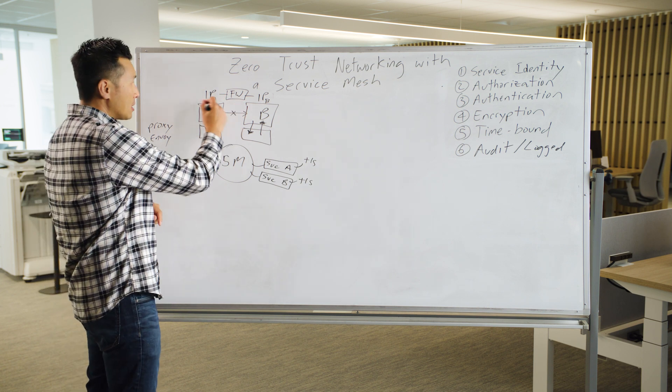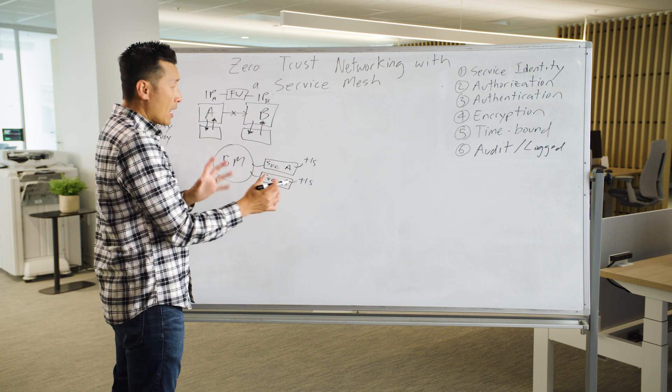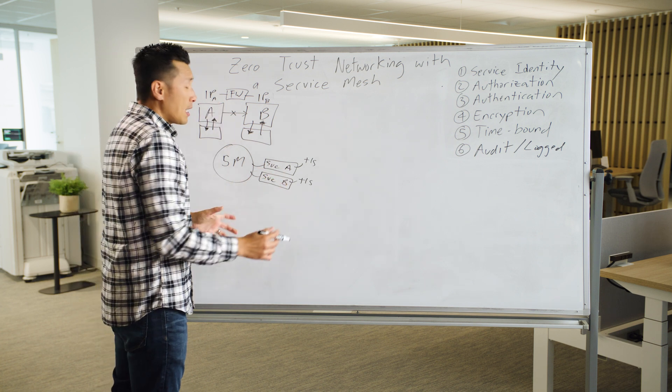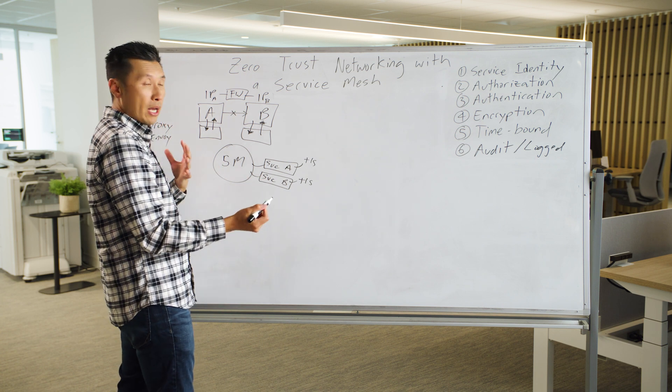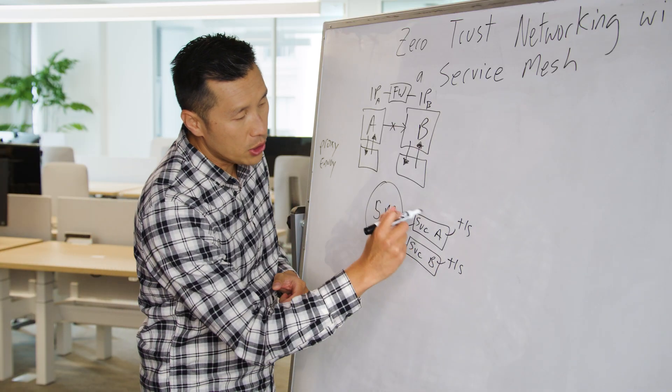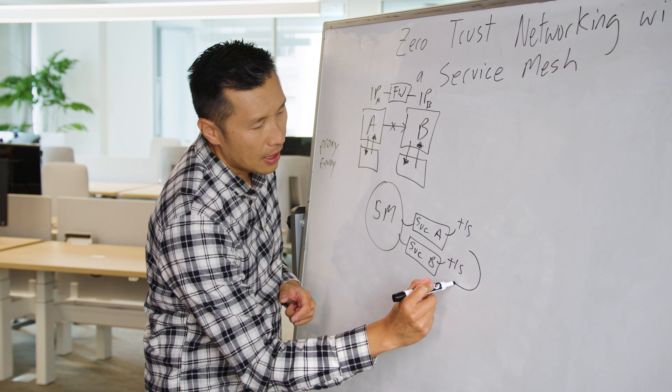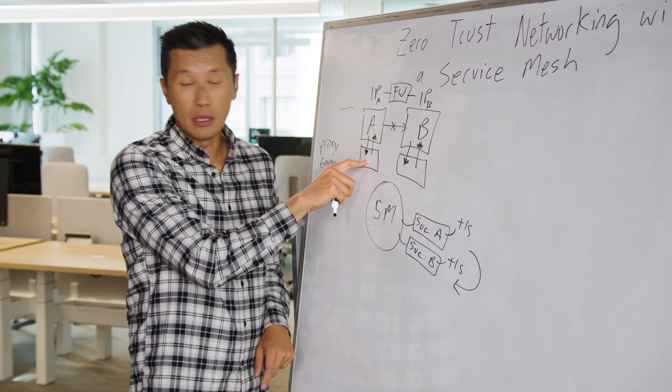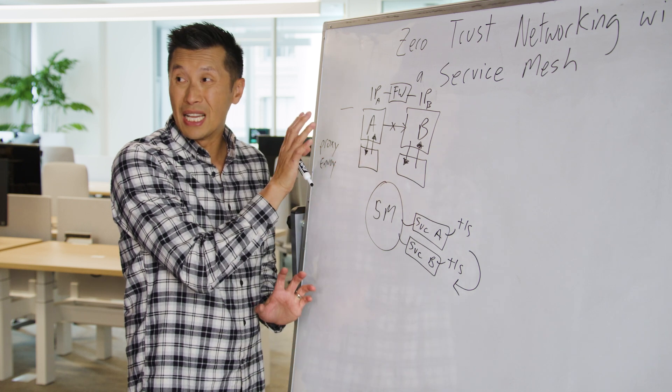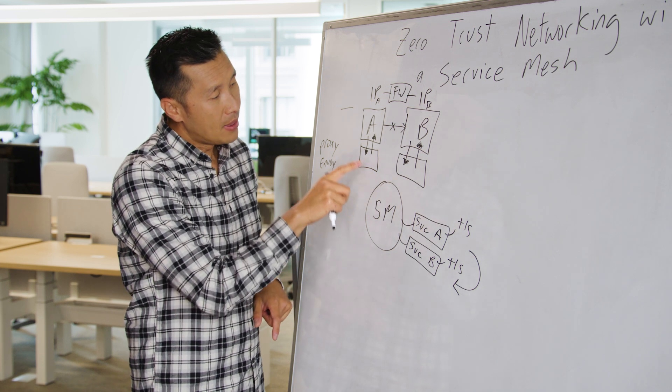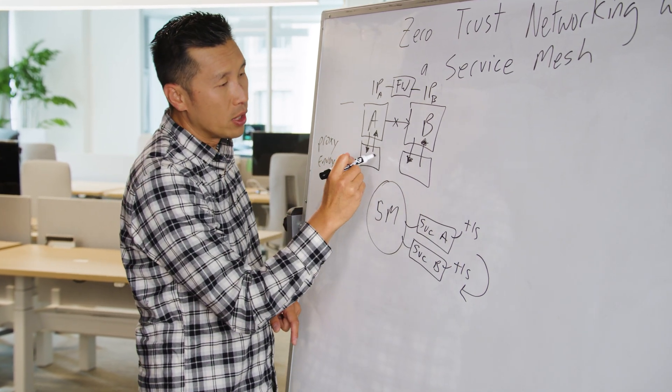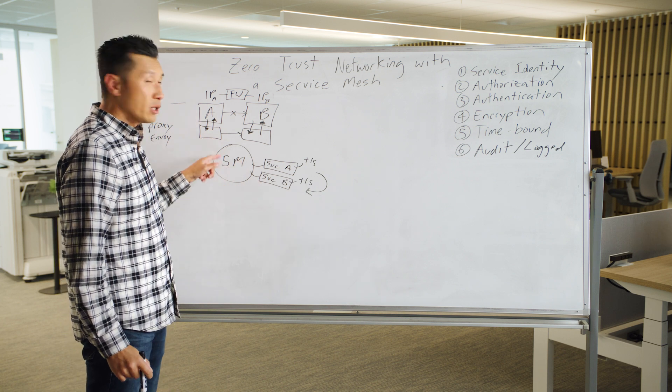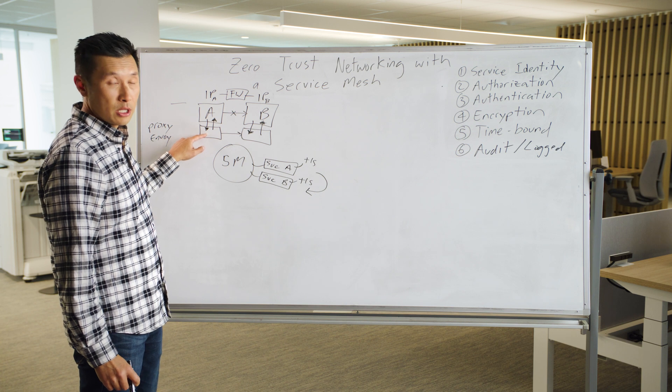Instead of using this traditional method, service identities can be used. Rather than using IP addresses, service identities can be the unit of control to determine access. A developer or an admin can go into the service mesh and create a rule that allows service A to talk to service B. That'll actually go to the proxy here. Since this proxy has a lot of control over how traffic moves, that proxy is really enforcing these rules. It's going to allow or deny traffic to move between these two proxies. Now you have a way of authorizing your services to communicate or not using the service mesh and enforced by this proxy.